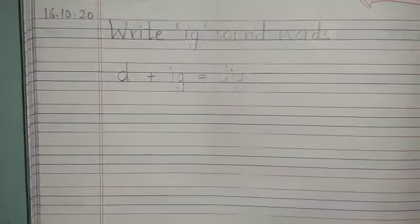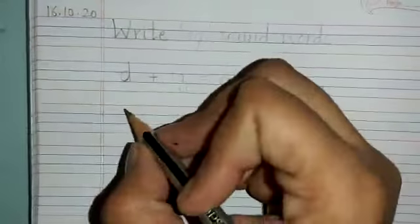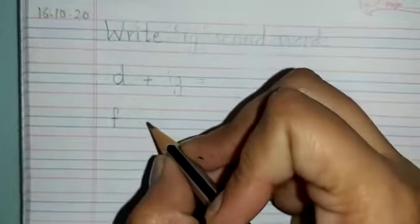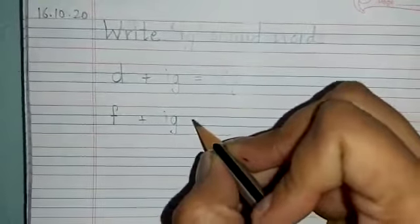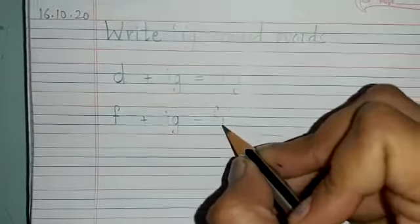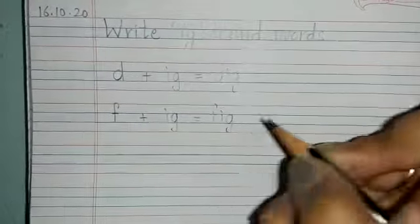Now, the next word is fig. So, we will write down over here: F plus IG. What word do we form? Fig. F, I, G, fig.